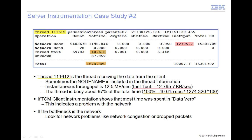You can use the TSM client instrumentation to determine if this is a network problem or a problem with the client itself. If the TSM client instrumentation shows most time in the data verb category, then the problem is with the network. Then the network can be evaluated for congestion or other potential network problems such as dropped packets.